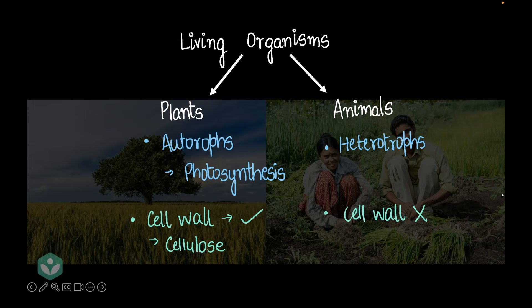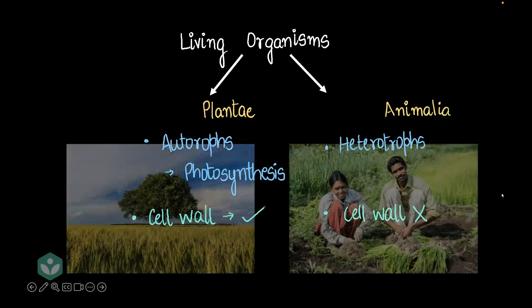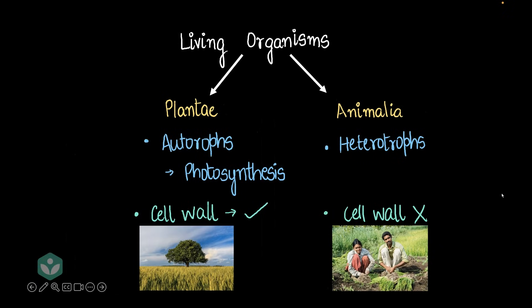Plants are called plantae in Latin, and animals are called animalia in Latin. Even in English we've carried over these names — plantae and animalia — to describe these two categories of living organisms. I always thought there were just two types of living organisms: plants and animals.